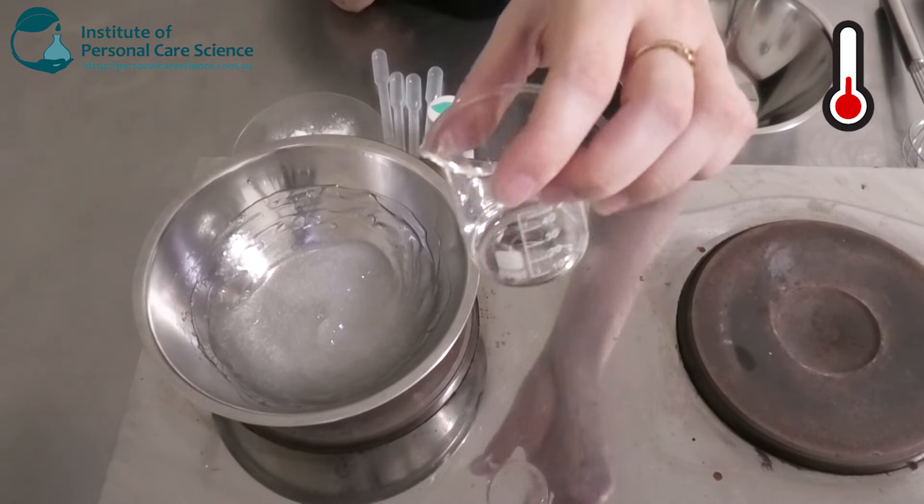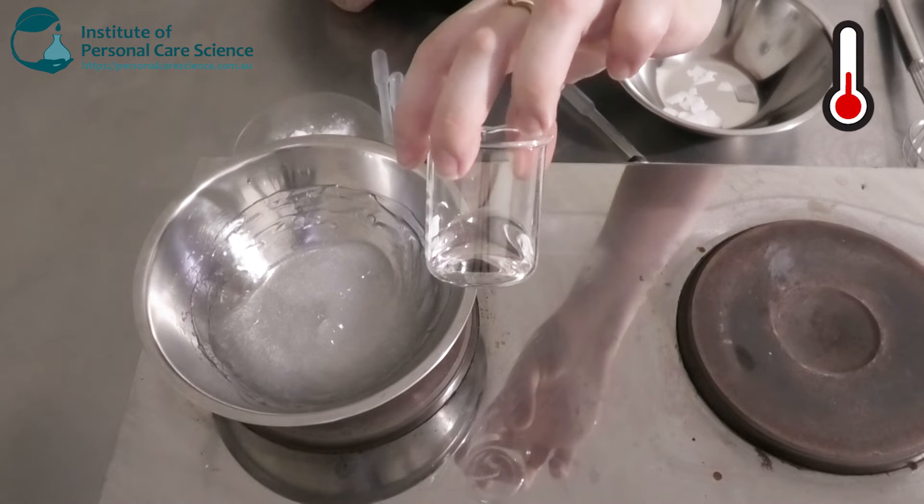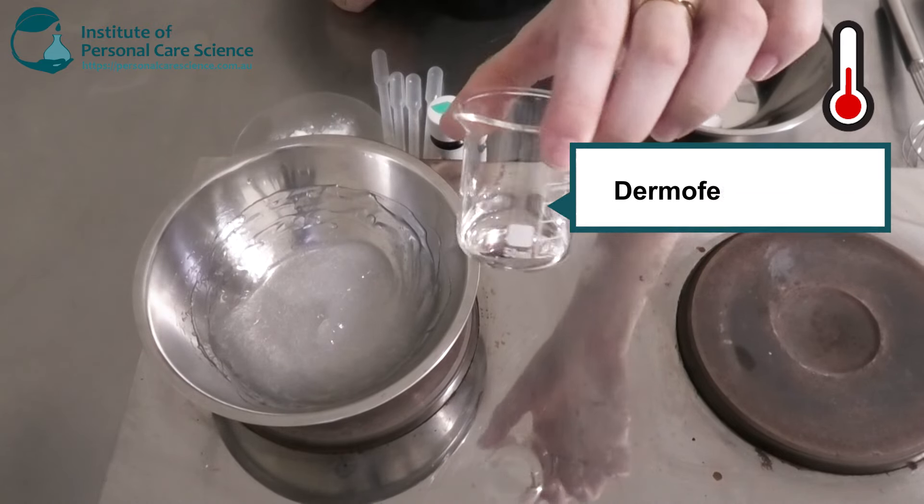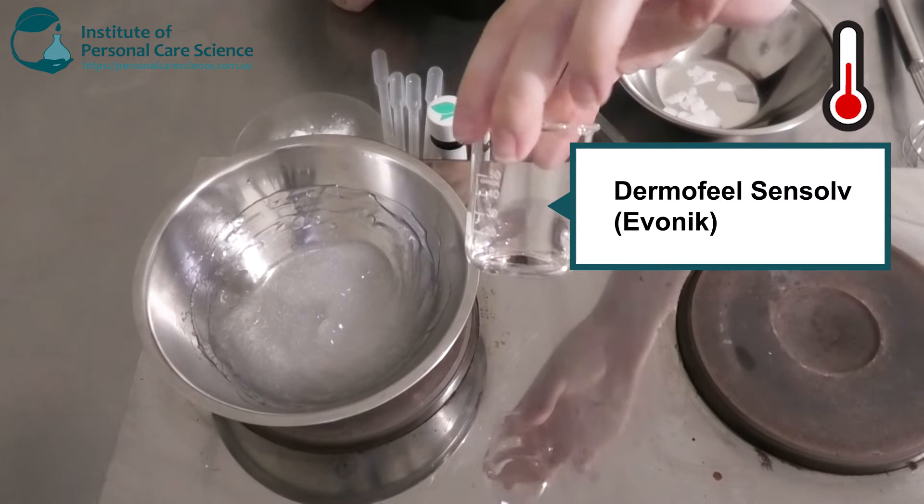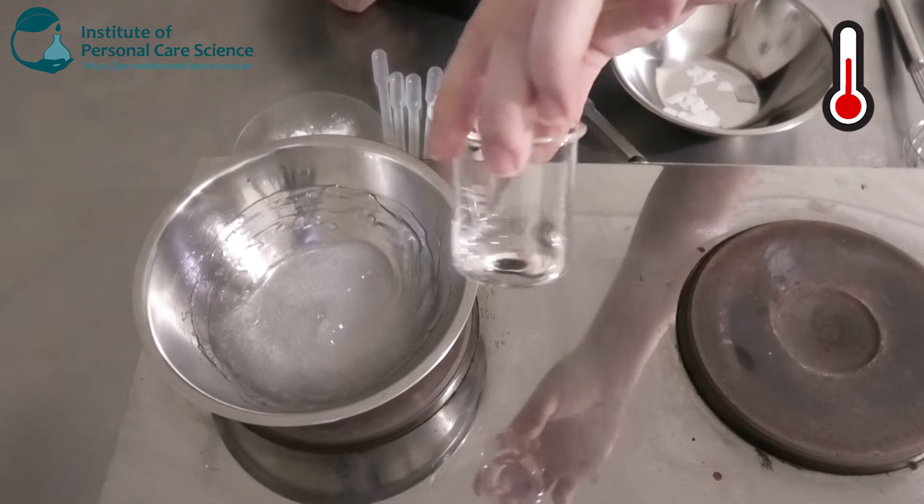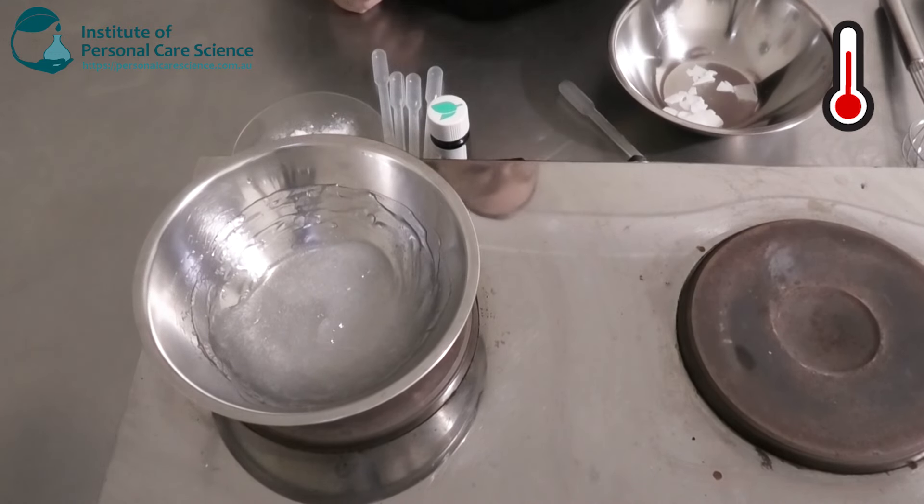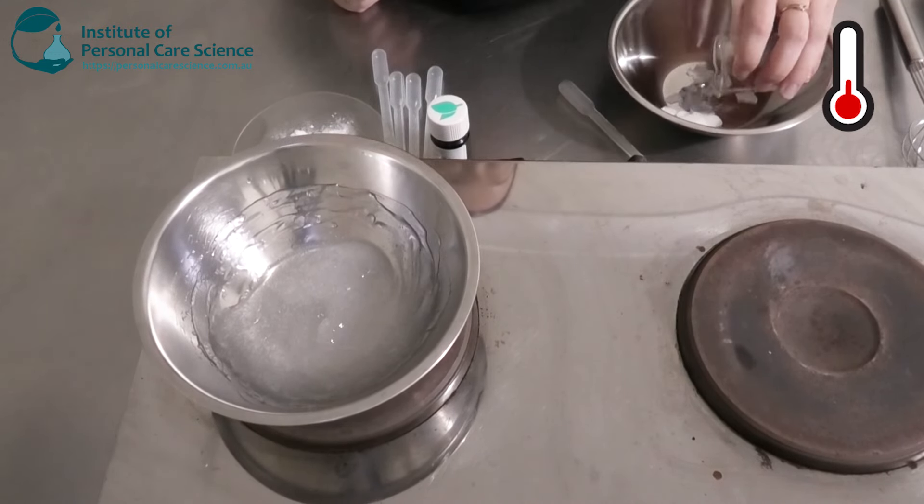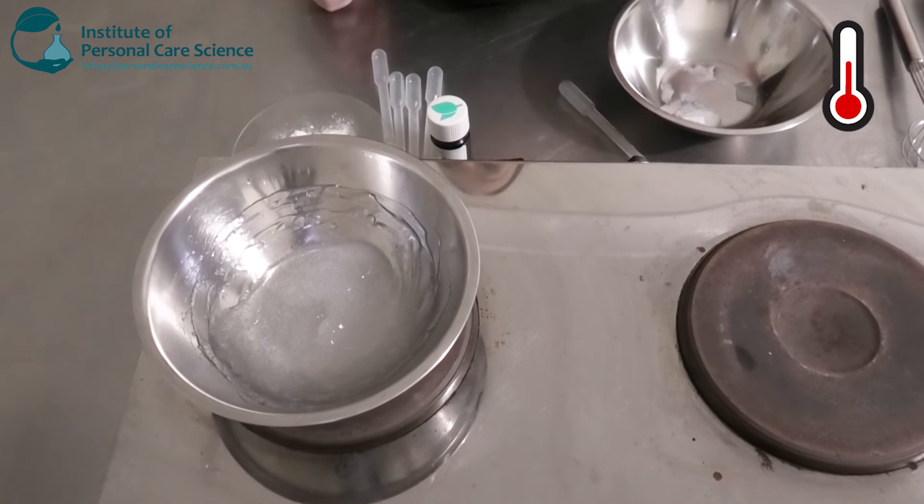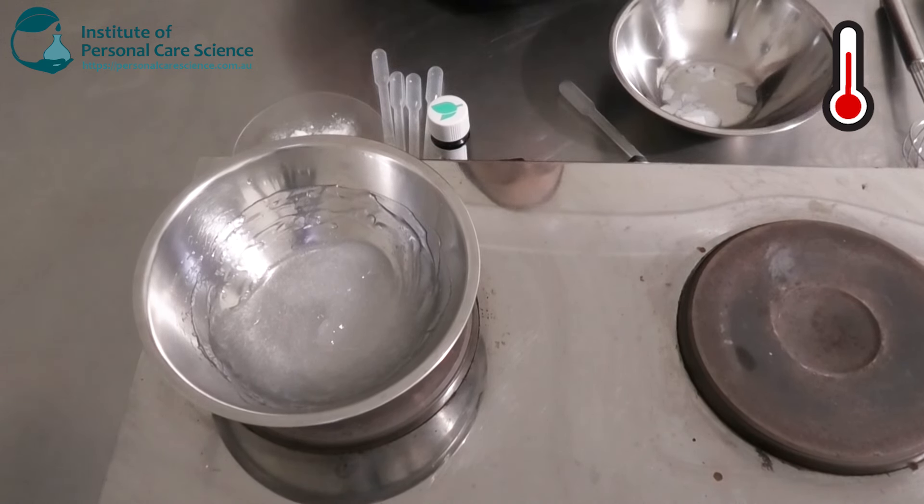To this I'm going to be using a light filling ester here. This is Dermofeel Sensolv. This is a really good silicone alternative, but it's naturally derived. It's light and it's also long spreading, so you don't want anything too heavy or greasy under your underarms. You have to remember too, you don't want it to stay wet all day because that's a bit unpleasant.